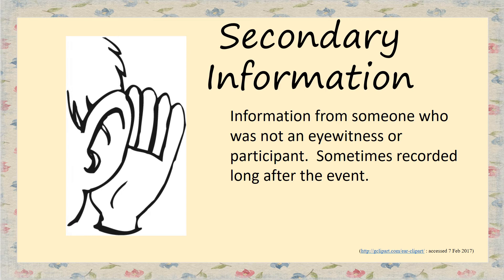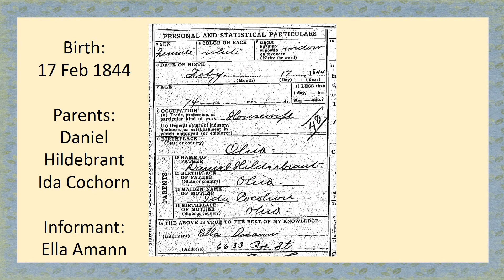Secondary information is information from someone who was not an eyewitness or participant, and sometimes that information was recorded long after the event. This is a portion of a 1917 death certificate — the portion that the family fills out. I wanted to show how secondary information can sometimes be right and sometimes be wrong. This information was given by Ella Amann about her mother and grandparents. Ella said her mother Naomi was born on the 17th of February in 1844, and that Naomi's parents were Daniel Hildebrandt and Ida Cochran.